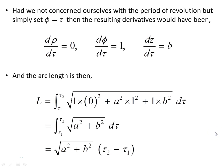Now if we're not concerned ourselves with the period of revolution but just simply set phi equal to tau, so we rescaled it and didn't worry about the period capital T. And we just set phi equal to tau. Then the resulting derivatives would have been drho/dtau is 0, dphi/dtau would have been now 1 because dphi/dtau is 1, dz/dtau would have been b. And substituting that into our integral, we get this object here which leads to the square root of a squared plus b squared times dtau.